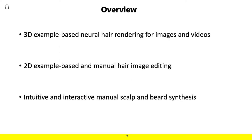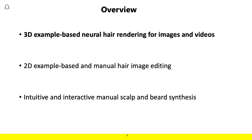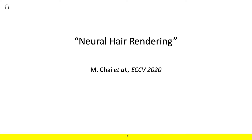In the following, we'll discuss three primary works that each differ in terms of what type of inputs and operations they allow on the part of the user, as well as what type of output domains they target. The first of these will be 3D example-based neural hair rendering for both images and videos, work that was presented at ECCV 2020 by Chi et al., with an approach known as neural hair rendering.